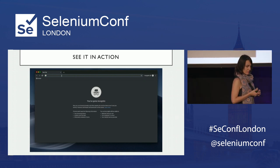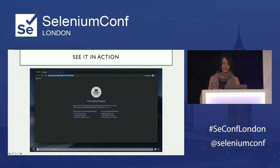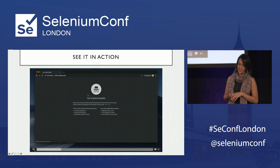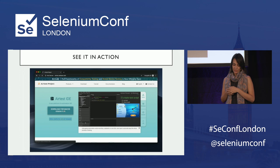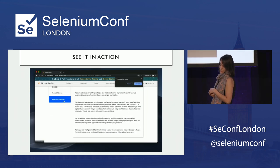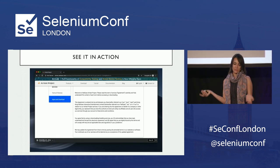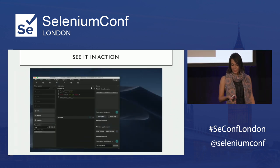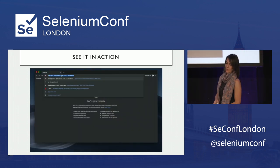Let's see it in action. To download the project, you just go to airtest.netease.com — there's a big download button there. I'm doing this on Mac, and this is an Apache license. You can also download it for Windows. On Mac you get a DMG; on Windows you get a zip file that you have to unzip. Very easy to get started — this is how it looks.